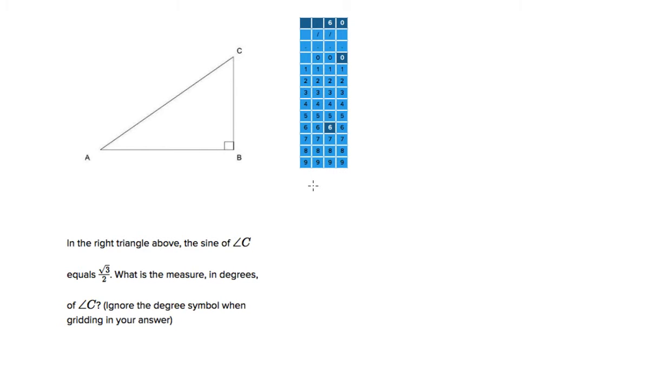Hi, I'm Brian. This is an SAT math question involving trig. We're given this right triangle here where the sine of angle C equals root 3 over 2, and we're asked for the measurement in degrees of angle C. So we want to figure out how many degrees that is.